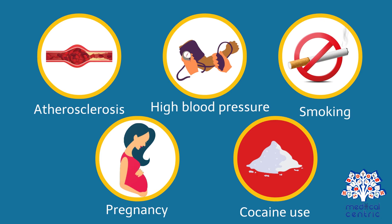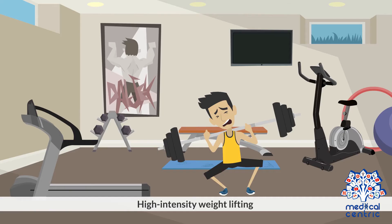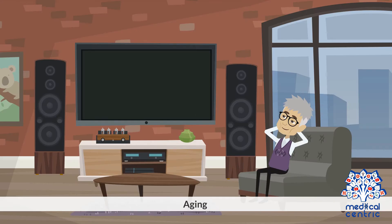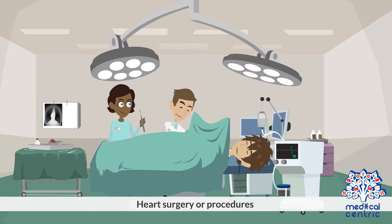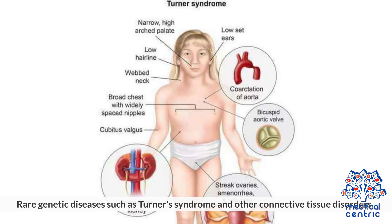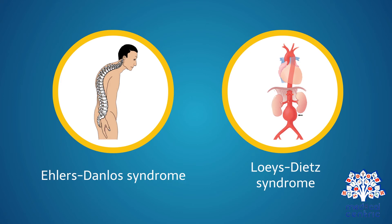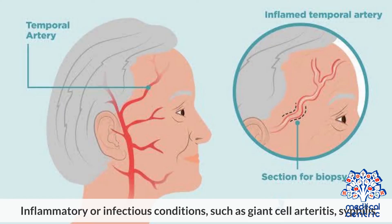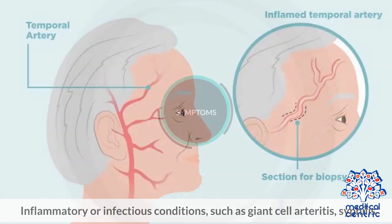Risk factors for the condition include hardening of the arteries or atherosclerosis, uncontrolled high blood pressure, smoking, pregnancy, cocaine use, a weak or bulging artery, high-intensity weightlifting, aging, heart surgery or procedures, coarctation or narrowing of the aorta, rare genetic diseases such as Turner syndrome, and other connective tissue disorders such as Ehlers-Danlos syndrome, Loeys-Dietz syndrome, and inflammatory or infectious conditions such as giant cell arteritis and syphilis.